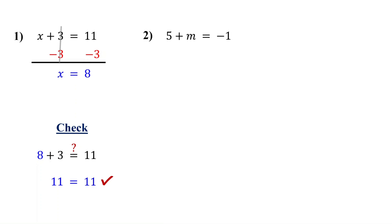Try this one. You might notice that the variable is not first in the equation, but that is totally fine. 5 plus m is the same as m plus 5, just written in a different order. Now you can clearly see that 5 is being added to m. So to get m by itself, you just need to subtract 5 from both sides.